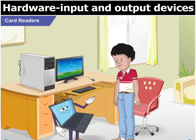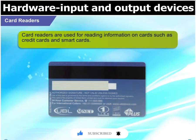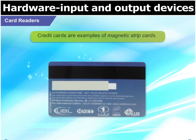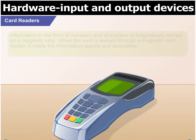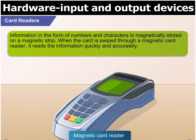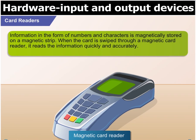Another interesting input device is a Card Reader. Do you know what it is meant for? Card Readers are used to read information on cards such as credit cards and smart cards. Credit cards are examples of magnetic strip cards. Information in the form of numbers and characters is magnetically stored on a magnetic strip. When the card is swiped through a magnetic card reader, it reads the information quickly and accurately.